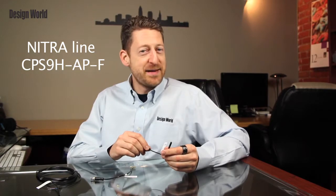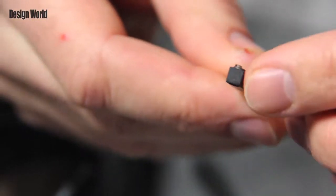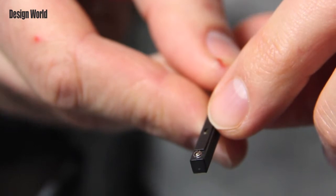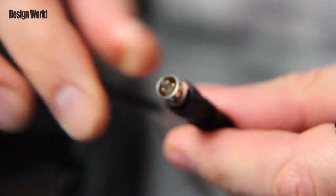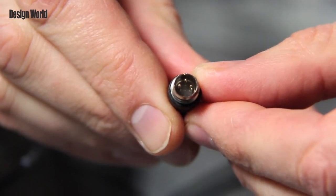First off is the CPS9H AP-F. This pneumatic cylinder switch is used for position sensing. It's magnetic, square in shape. It's a normally open, three-wire style that's 5-28VDC.